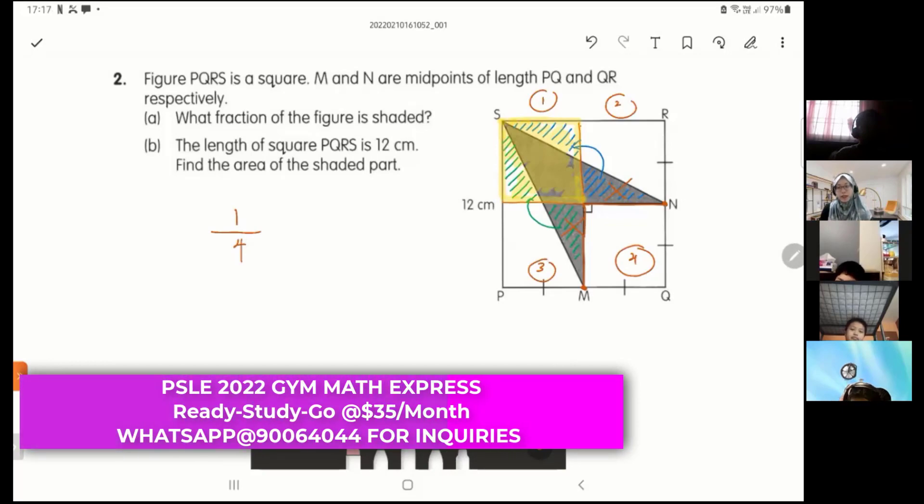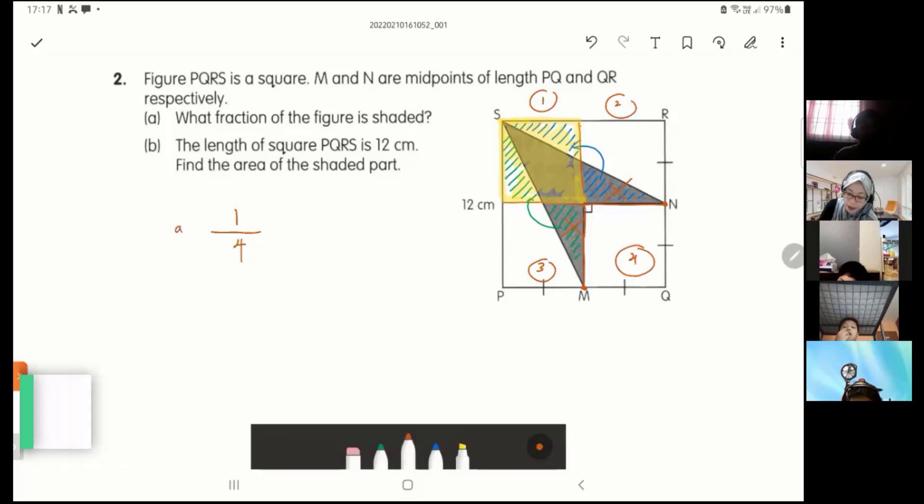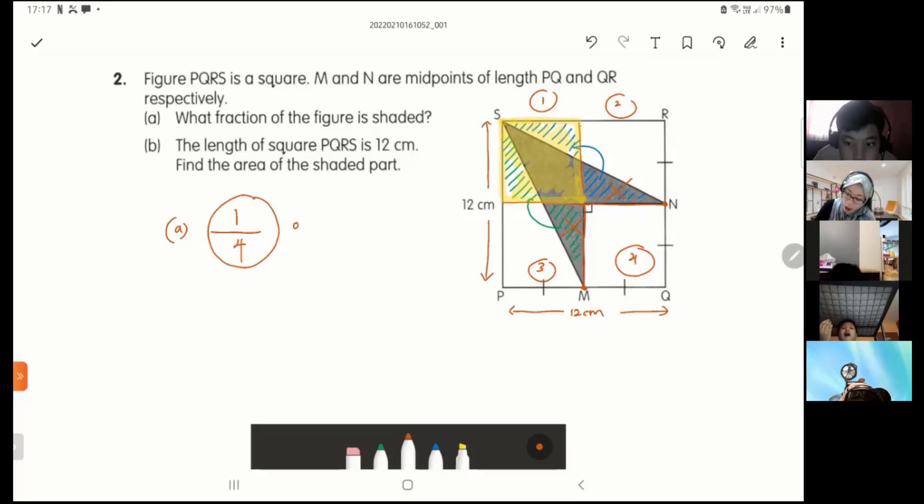Out of how many squares do I have? I have one, two, three, four. I have four parts. So the whole triangles, just now I moved them already, it is actually filling up one out of the four squares available. Can you see? One out of the four parts available. So my answer for part A is just one-fourth. That's it.